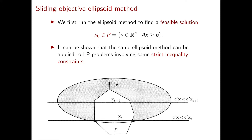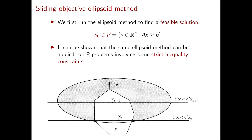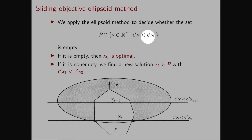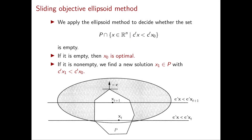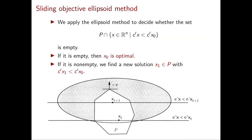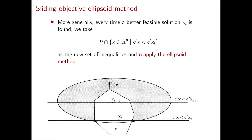In order to proceed, I need to mention that the ellipsoid method can also be applied to linear programming problems involving strict inequality constraints. The idea is very simple: we look at the cost of our vector x0, and we search for a vector in P with cost strictly lower than that of x0. So, in the next iteration, we apply the ellipsoid method to the set P intersected with the points in R^n with cost strictly smaller than the cost of x0. The ellipsoid method will then tell us if this set is empty or not. If it is empty, then x0 is optimal. Otherwise, it will find a new solution x1 in P with cost strictly smaller than that of x0 — in other words, c transposed x1 is strictly smaller than c transposed x0. The algorithm then proceeds recursively in this way.